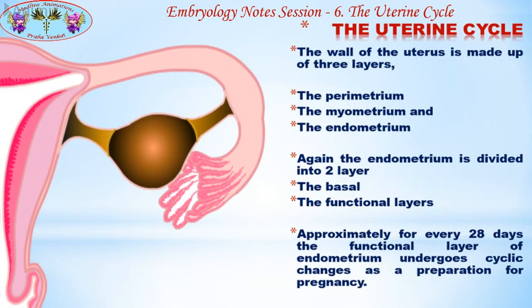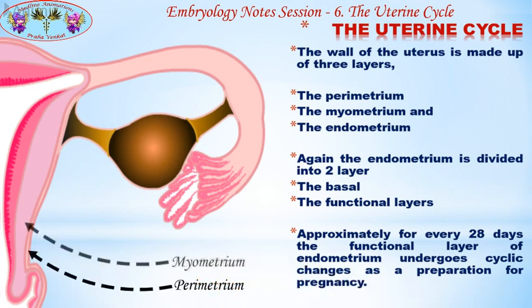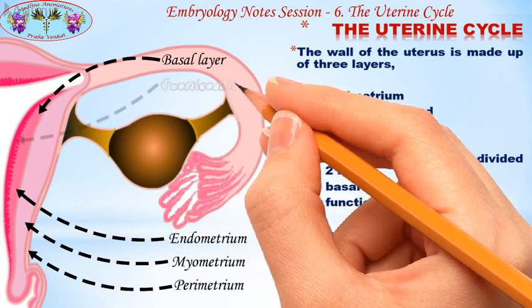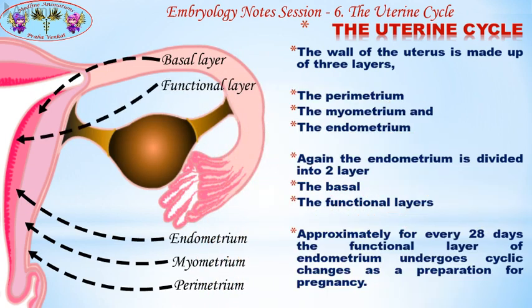The wall of the uterus is made up of three layers: the perimetrium, the myometrium, and the endometrium. The endometrium is further divided into two layers: the basal layer and the functional layer. Approximately every 28 days, the functional layer of the endometrium undergoes cyclic changes as a preparation for pregnancy.